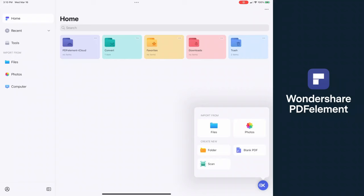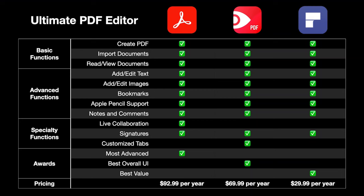In terms of pricing, Adobe comes in at the most expensive rate of $92.99 per year, PDF Expert is slightly less at $69.99 per year, and PDF Element is a much more affordable solution at $29.99 a year. For a simplified overall recommendation: if you need to sign and collaborate, go with Adobe. If you want the prettiest UI, go with PDF Expert. But if you want a well-balanced editor with everything you'd expect plus watermarking, batch conversion, and document sharing, go with PDF Element.